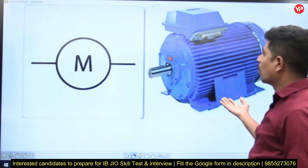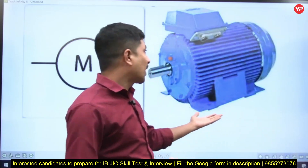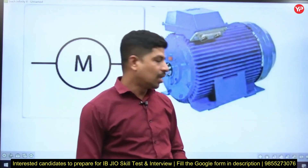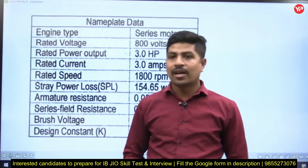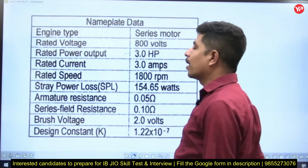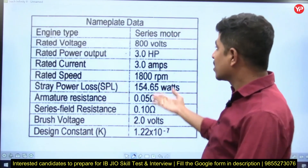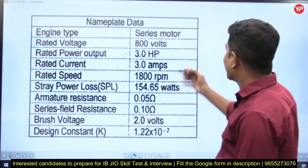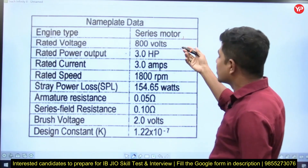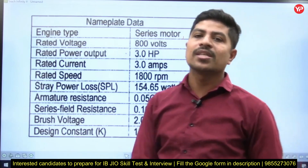This is a DC motor — this is how a motor looks practically. These are the nameplate details of the motor. It clearly states the motor type: series motor. In DC there are different types of motors — series, shunt, and compound.